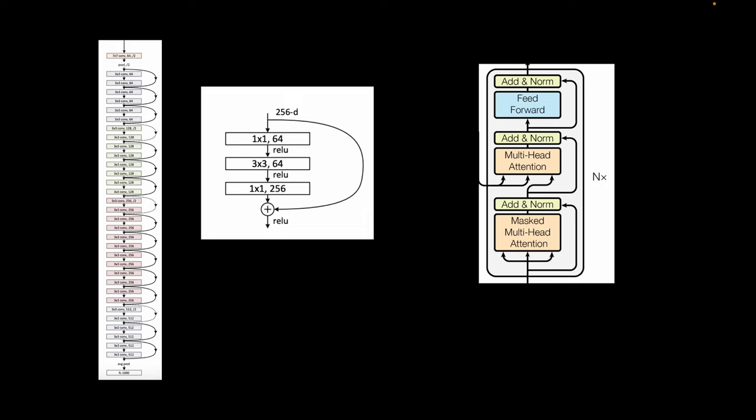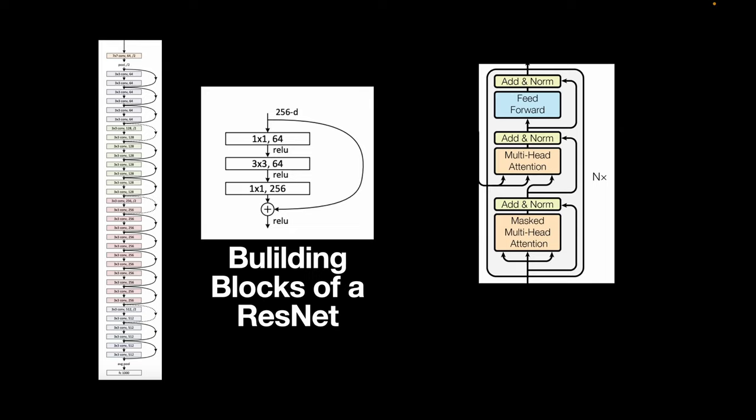We all know that neural networks are composed of several neural network blocks. For example, if you take the famous ResNet, it has several ResNet blocks in sequence. Similarly, the now famous Transformers has a sequence of multi-headed attention blocks. To understand the ControlNet architecture, let's consider a single block of any neural network from a generative model, say stable diffusion.